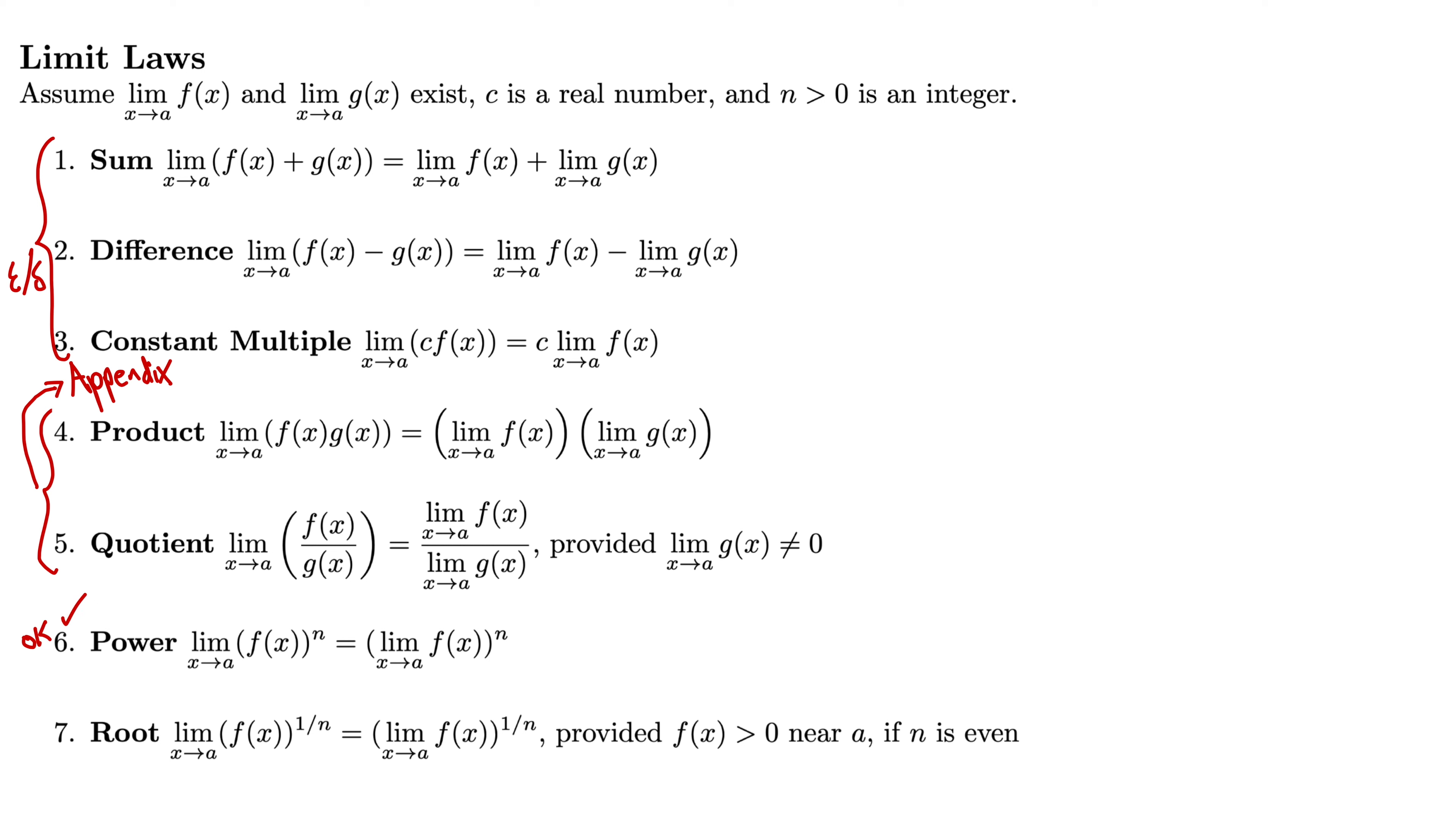Finally, we have the root limit law, which essentially says that the limit comes inside a 1 over n power. So we have the limit as x goes to a of f(x) to the 1 over n equals the quantity of the limit as x goes to a of f(x) all to the power of 1 over n. We have provided that f(x) is greater than 0 near a if n is even. So that's just to avoid getting into complex numbers, which is a completely different class and a very interesting class. So take a class in complex analysis, you do all this calculus again and more using the complex plane instead of the real numbers. So highly recommend that class.